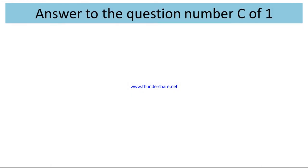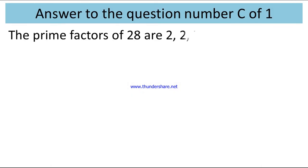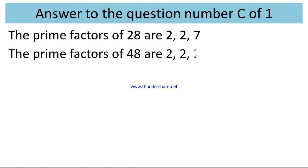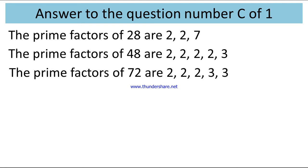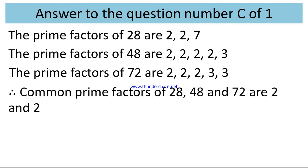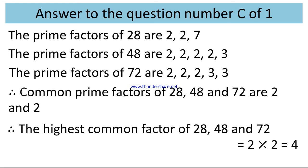Answer to question number (c) of 1. The prime factors of 28 are 2 × 2 × 7. The prime factors of 48 are 2 × 2 × 2 × 3. The prime factors of 72 are 2 × 2 × 2 × 3 × 3. The common prime factors of 28, 48, and 72 are 2 and 2. Hence, the highest common factor (HCF) of 28, 48, and 72 equals 2 × 2 = 4.